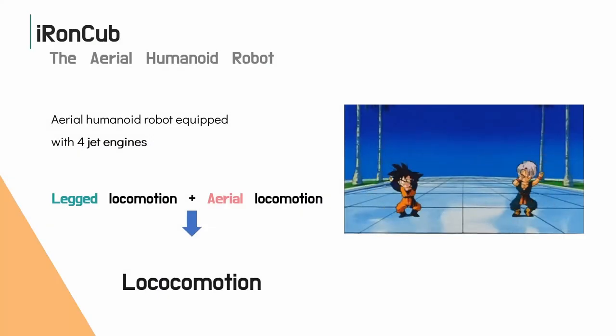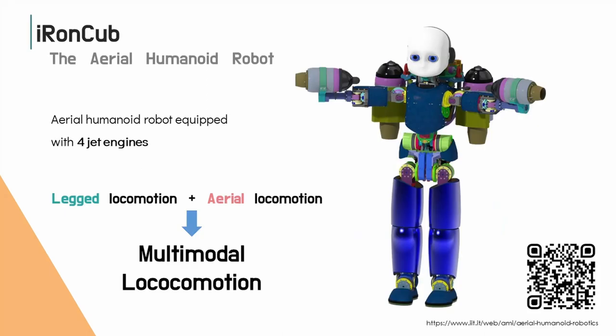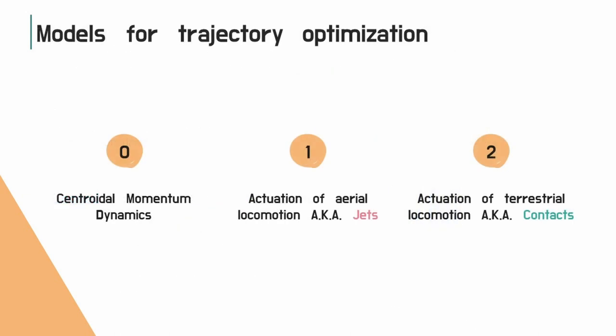At the Artificial and Mechanical Intelligence Lab, we develop IronCub, the flying humanoid robot, which implements multimodal locomotion combining terrestrial and aerial locomotion modes. Such a platform can be described through three models we will use in the trajectory optimization layer.